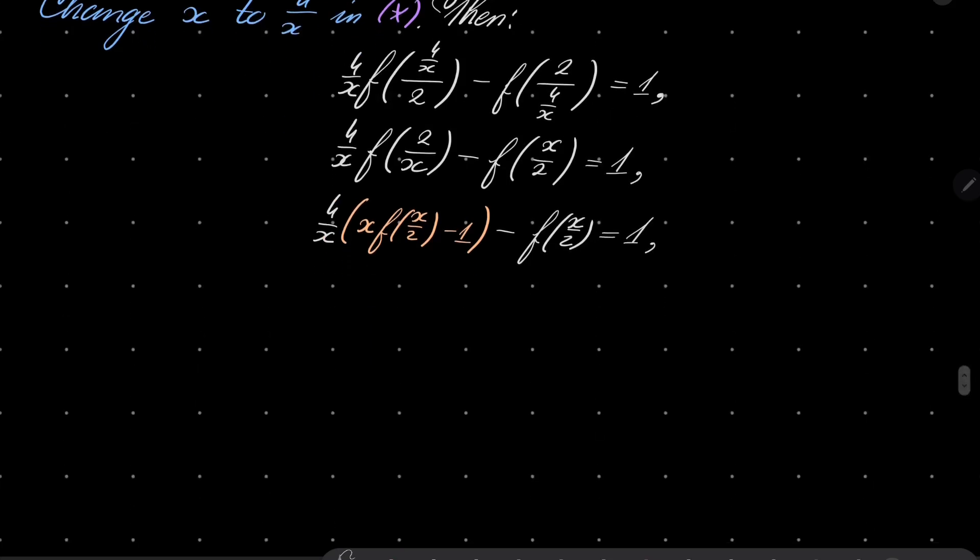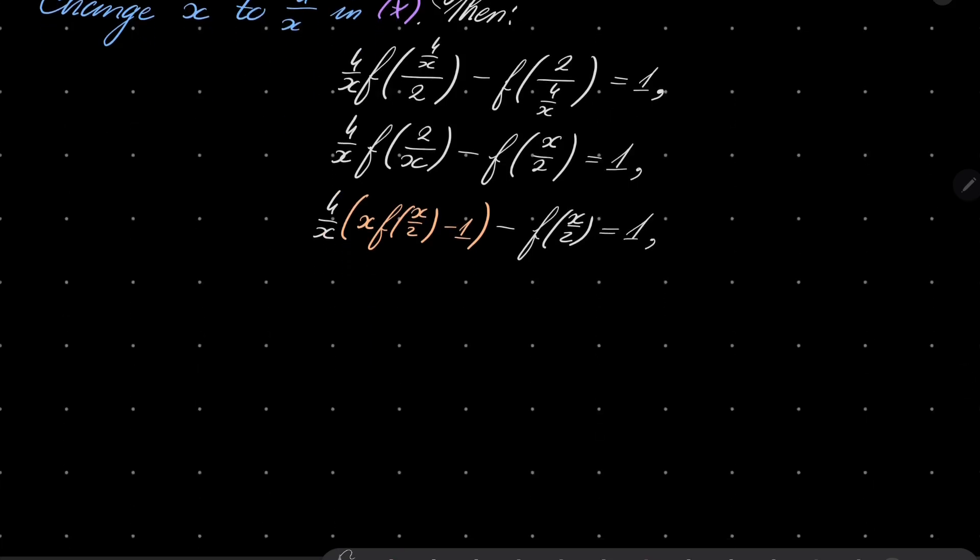All right, now what do we have? We have 4/x times (xf(x/2) - 1) minus f(x/2) equals 1.